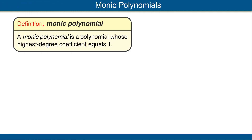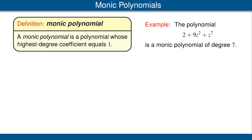A monic polynomial is a polynomial whose highest degree coefficient equals 1. For example, consider the polynomial shown here. The highest degree is the 7th degree, and the coefficient of z to the 7th is 1. Thus, this is indeed a monic polynomial.